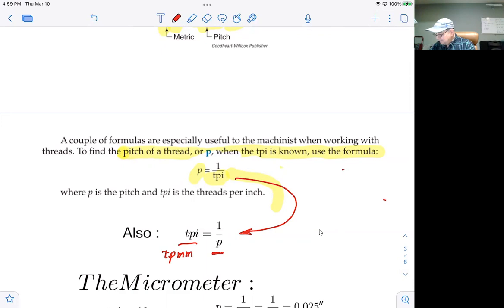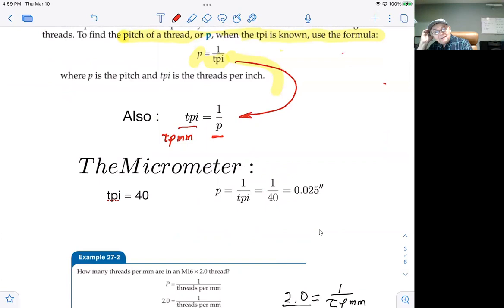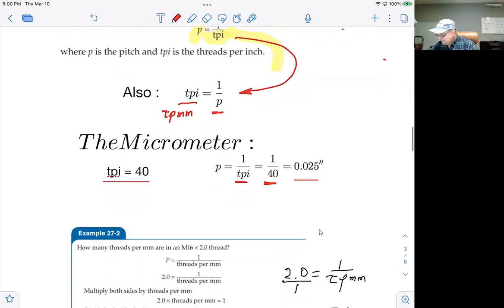The micrometer example that we looked at in the last unit where the threads per inch were 40. The pitch is one over the threads per inch, which would be one over 40. And you can run that on your calculator. It'll come back and tell you 0.025. And of course, the units would be inches because the threads are specified in threads per inch. And that's why every time you make one complete revolution of the spindle, it moves at 25 thousandths along the sleeve. In if you're turning it clockwise, out if you're turning it counterclockwise. So there's the formulas applied to the micrometer example that we looked at before.